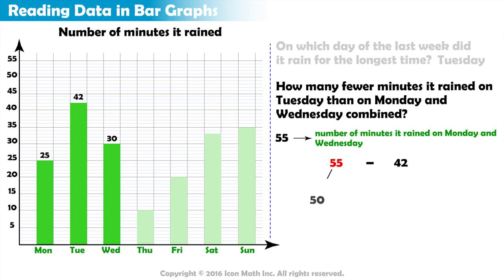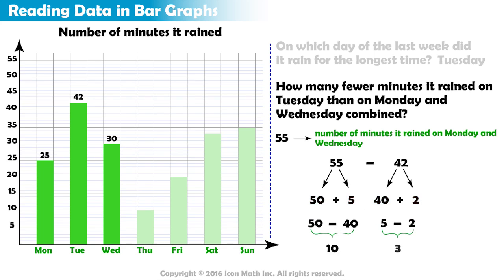55 is 50 plus 5, and 42 is 40 plus 2. So we subtract 40 from 50 — that equals 10. Then we subtract 2 from 5 — that equals 3. Then we combine our results: 10 plus 3 equals 13. So it rained for 13 fewer minutes on Tuesday than on Monday and Wednesday combined.